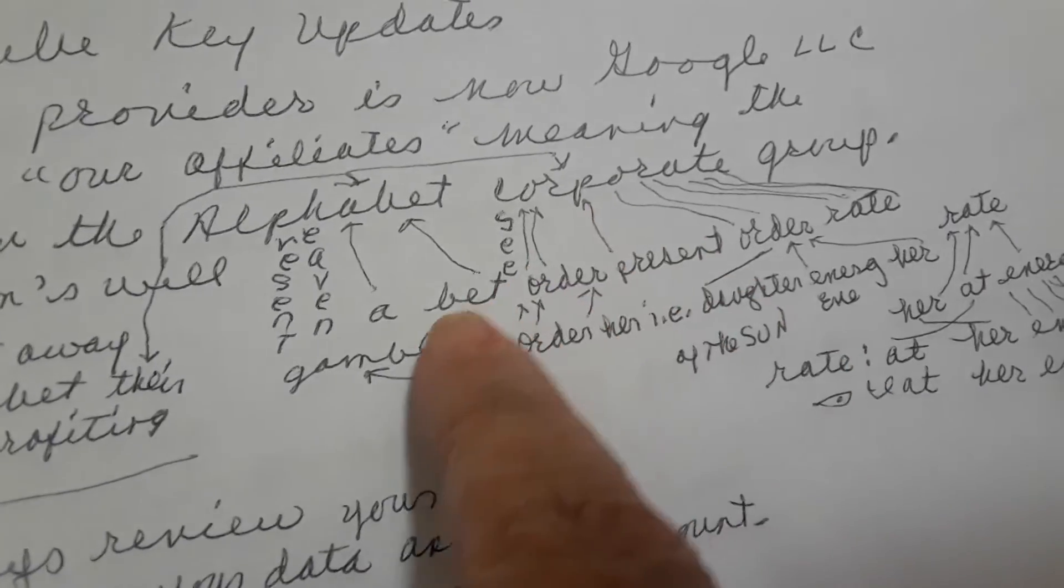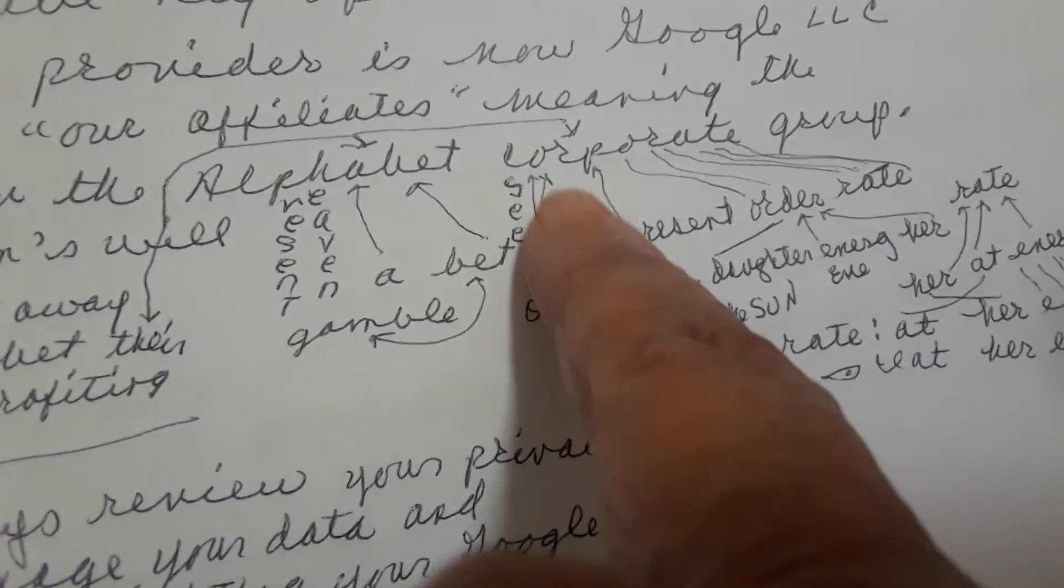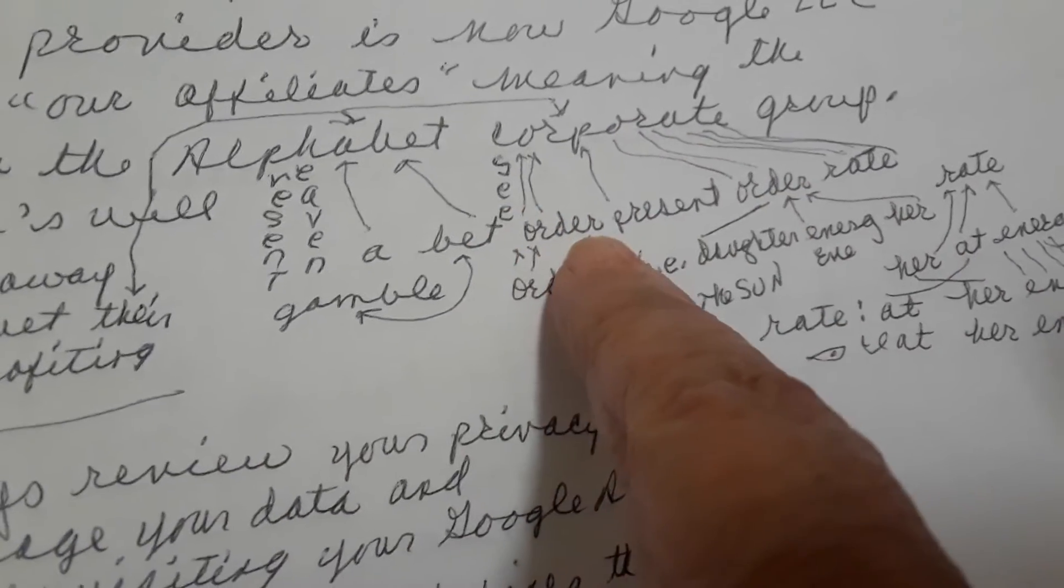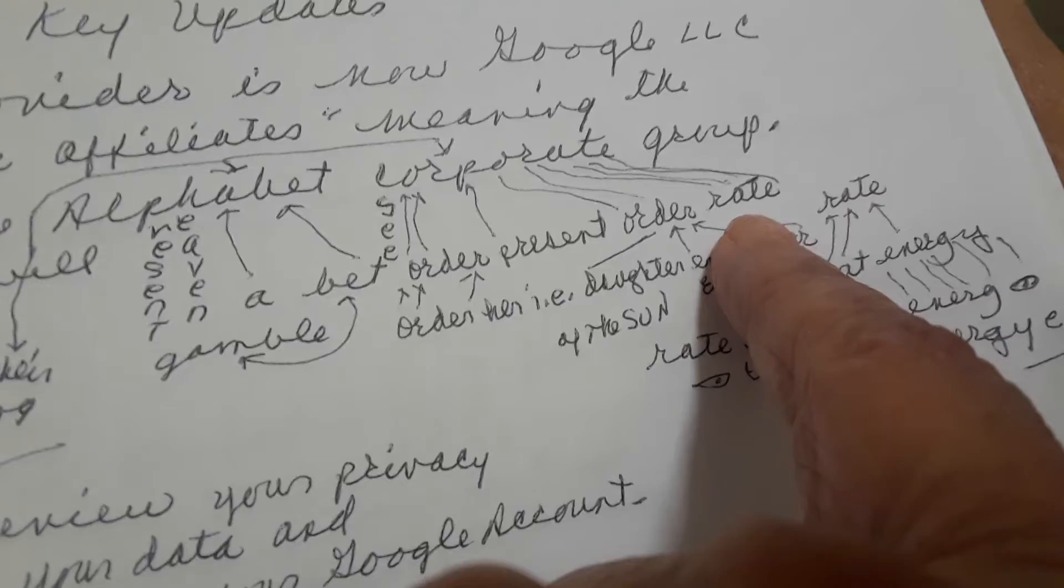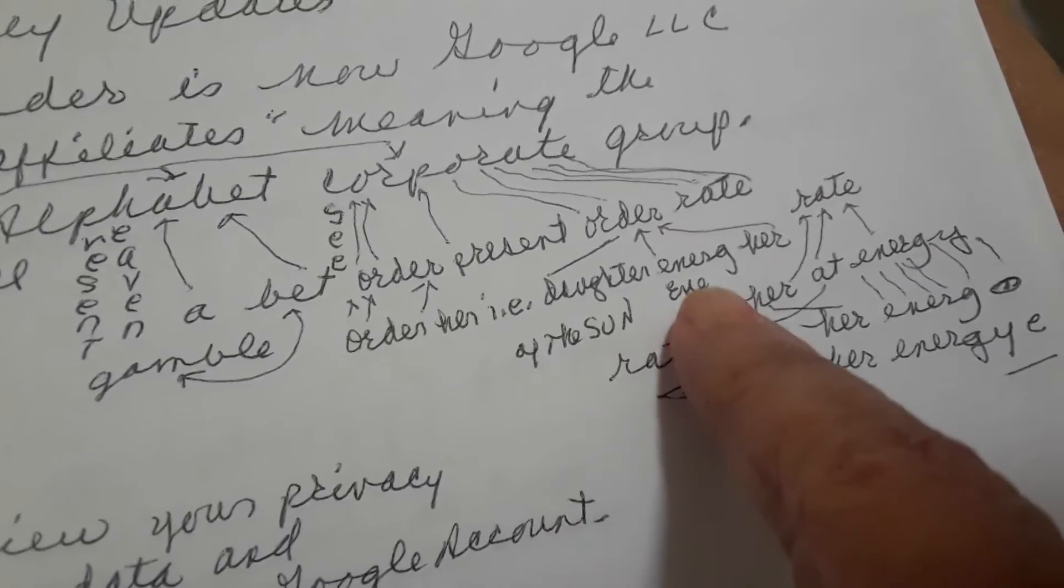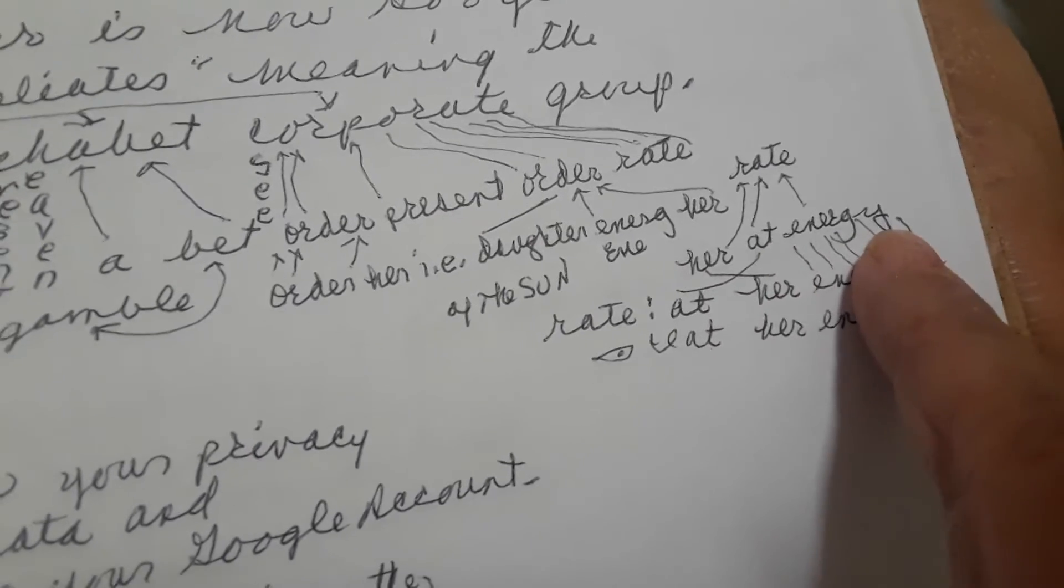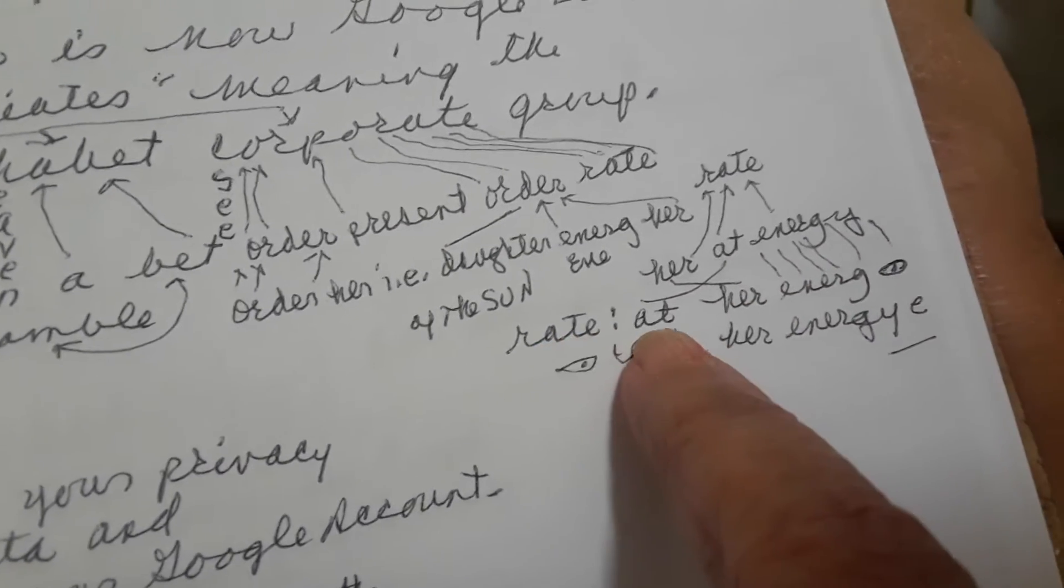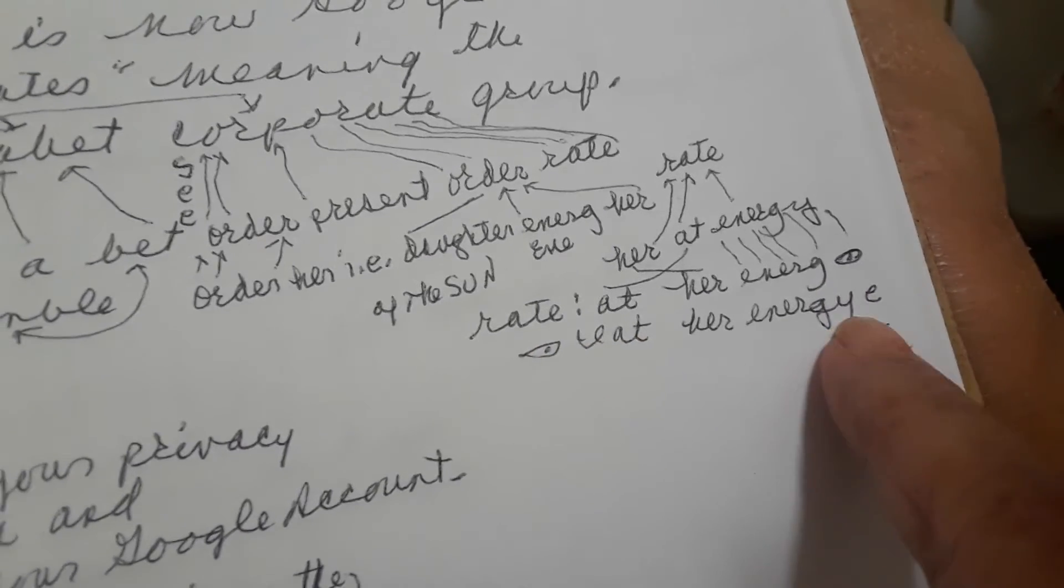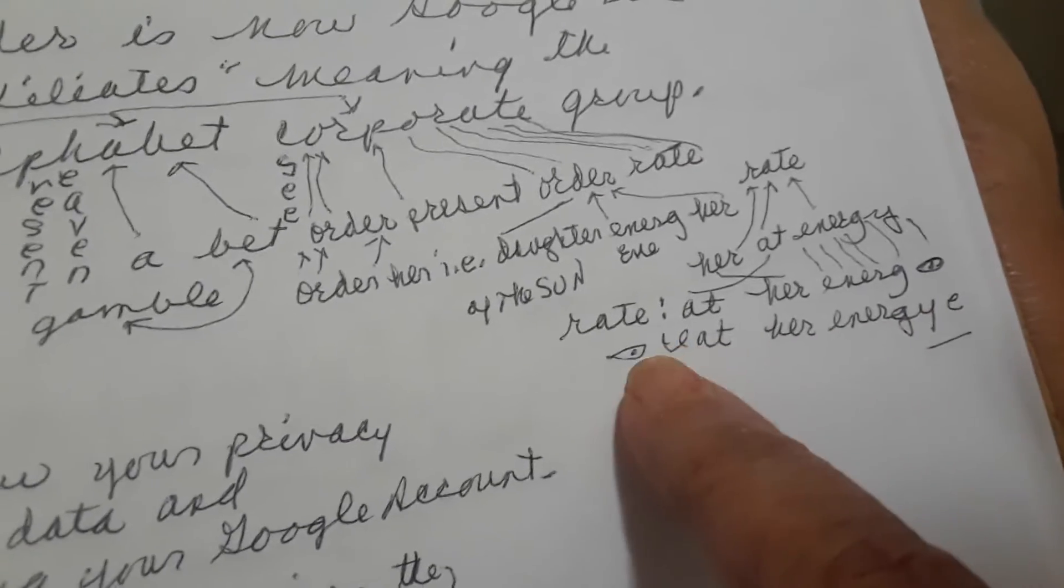And over here, corporate. C for see, O for order, P for present, O for order, R-A-T-E rate. See, order, present order rate. Order her, i.e., daughter of the sun, energy, Eve. Her rate, at her energy. Rate at her energy's eye. I, at her energy. Ye. So ye are using her energy, which she can see.